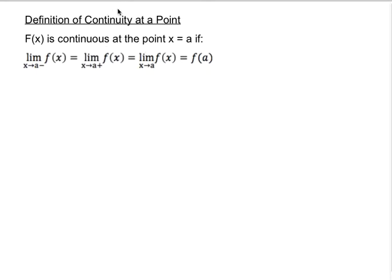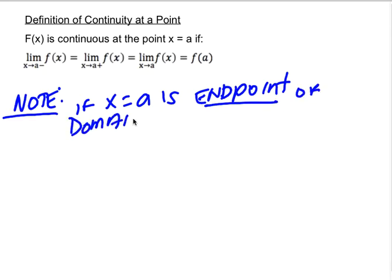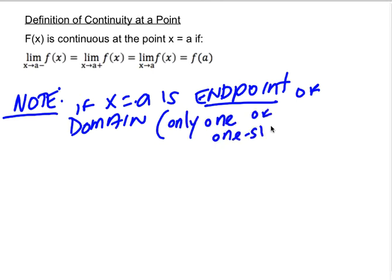Now there is a caveat to this — a note. If x equals a is an endpoint of the domain, then this behaves a little bit differently. If x equals a is an endpoint, that means that only one of the one-sided limits can be evaluated.